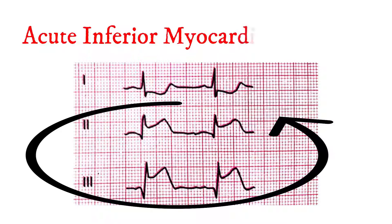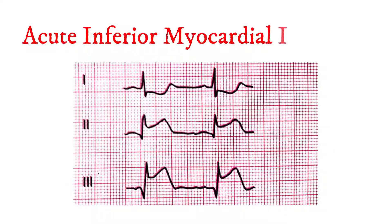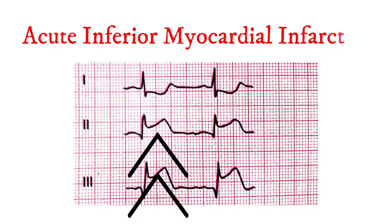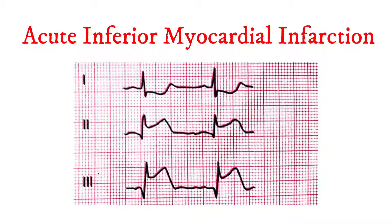Hyperacute ST segment elevation is seen in the inferior leads. AV conduction abnormalities are commonly observed with inferior myocardial infarction. Remember, these atrioventricular abnormalities are frequently transient and may not require pacing.